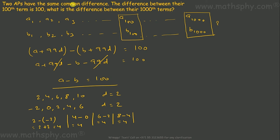What I'm trying to say is: if the common difference in any two series is the same, then the difference between numbers of the same terms — a1 minus b1, a2 minus b2 — will also be the same. We have just seen this here. The difference between the 100th terms is 100, and we found the difference between the first terms of both series is also 100.